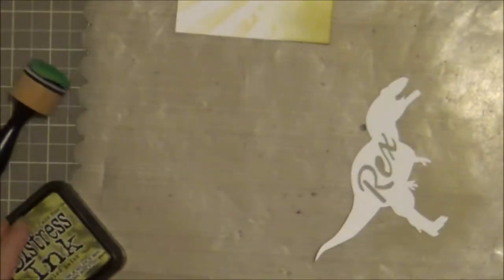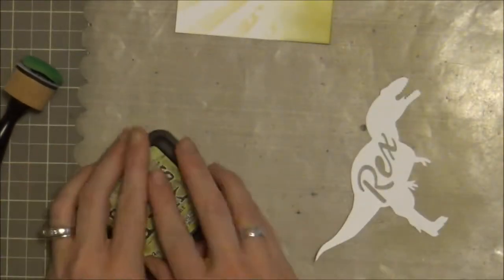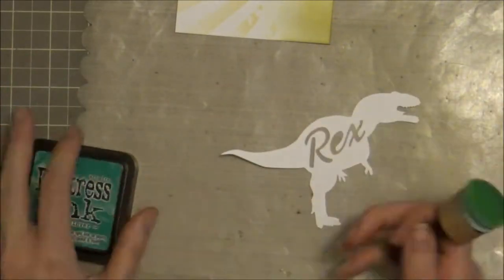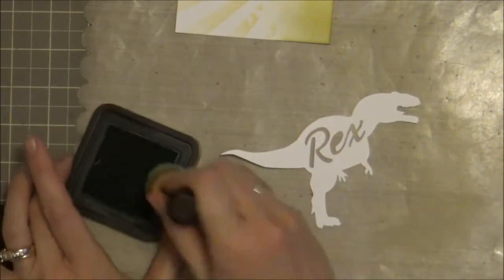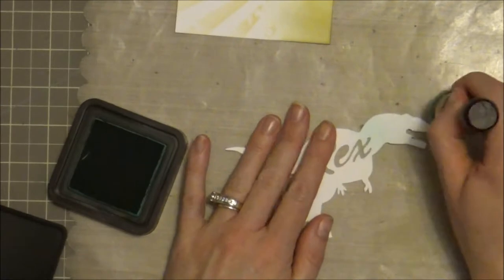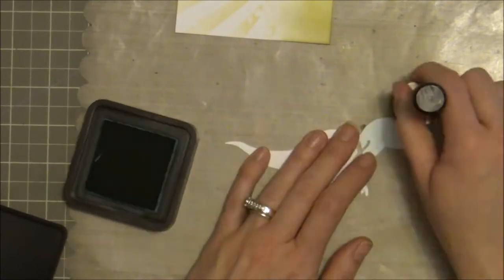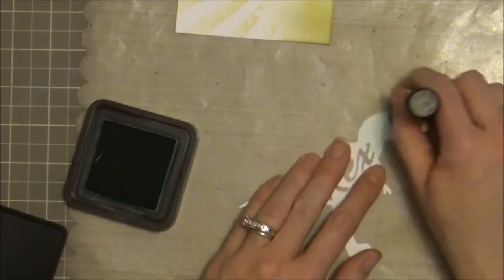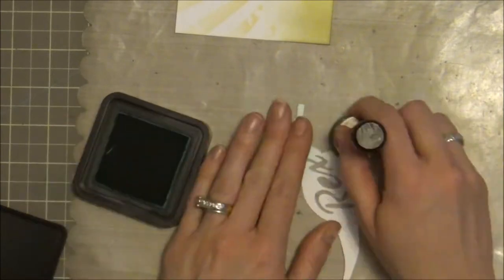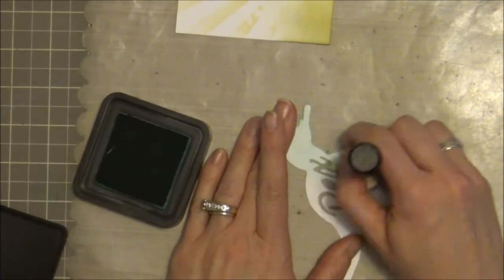Again, just work slow, build those colors up. And then I'm going to go ahead and I think at this point ink up my T-Rex. Going to use the lucky clover and peeled paint, and I'm using the smaller circular ink blending tool, which I really do prefer these, but I just don't have enough to match up with all of my ink colors at this time.